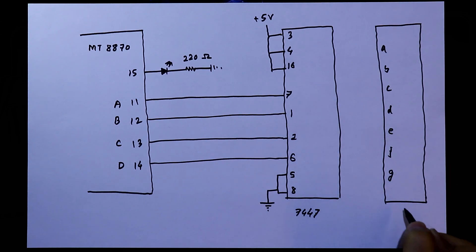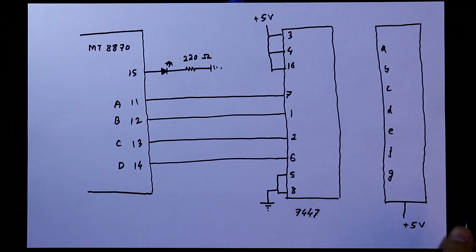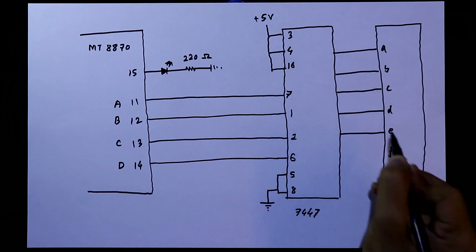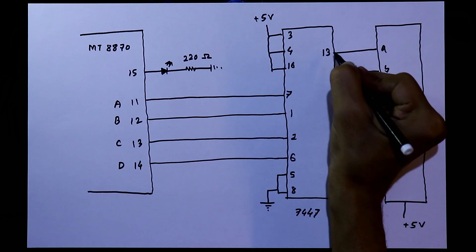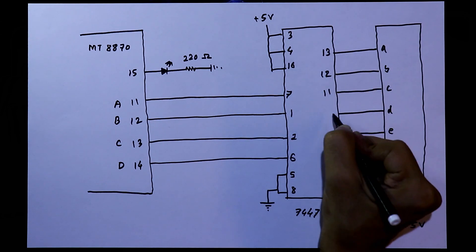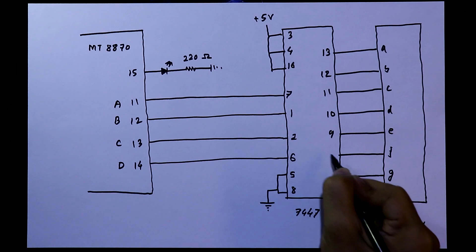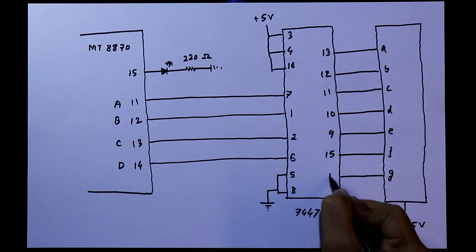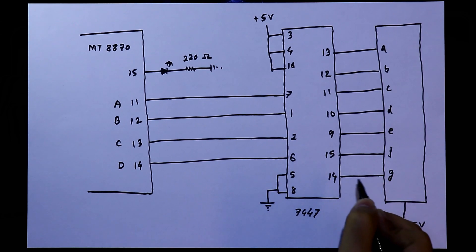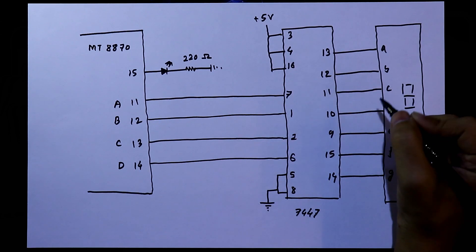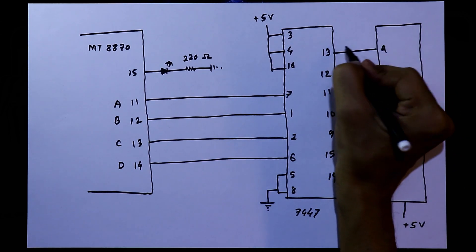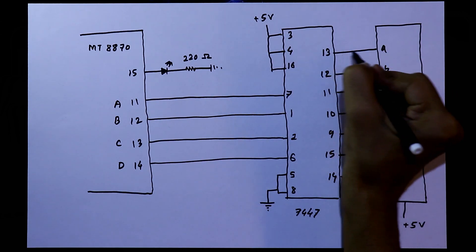The seven segment display has seven pins: A, B, C, D, E, F, and G. As it is a common anode display, the common pin is connected to plus 5 volts. The display pins are pin numbers 13, 12, 11, 10, 9, 15, and 14 for segments A through G. Between the IC and the display we need to connect 220 ohm resistors.